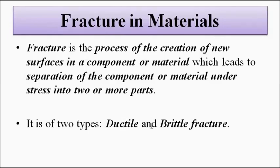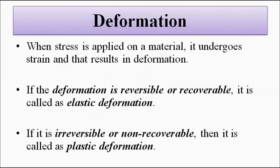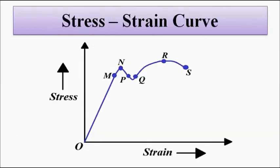Both ductile and brittle fracture are related to the stress-strain curve. Elastic and plastic deformation come into play here. When stress is applied on the material it undergoes strain, resulting in deformation. If the deformation is reversible it is called elastic deformation, and if it is irreversible it is called plastic deformation. The stress-strain curve for a particular material can take different shapes, with various characteristic points on it.